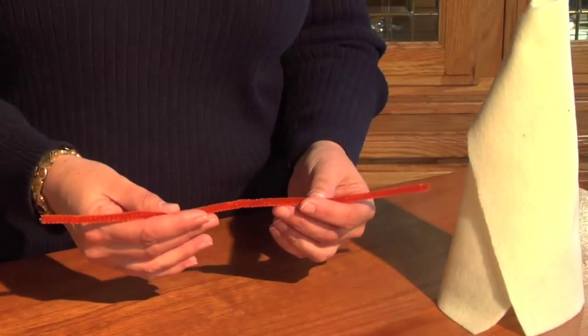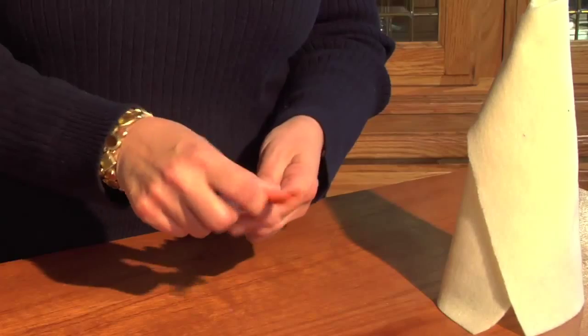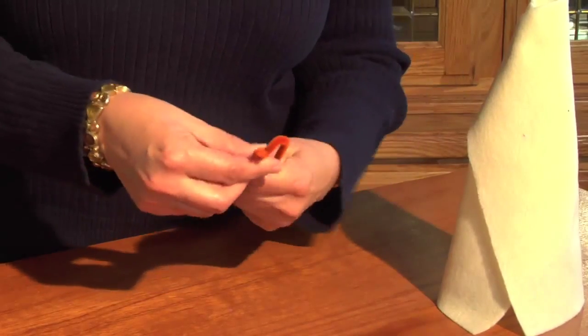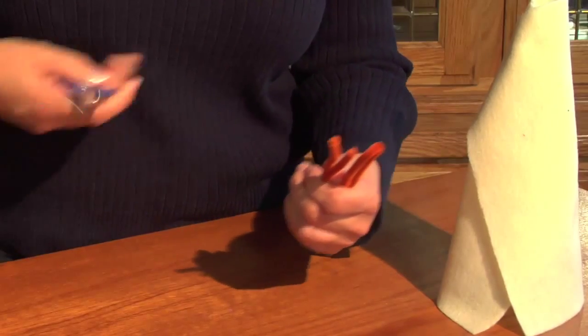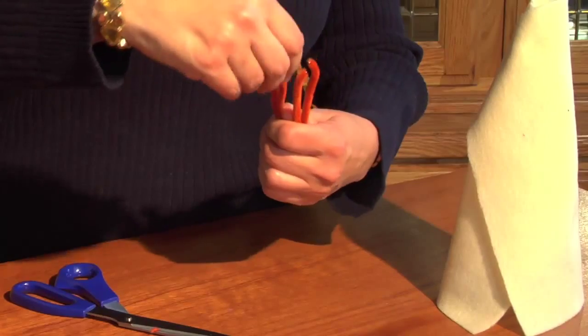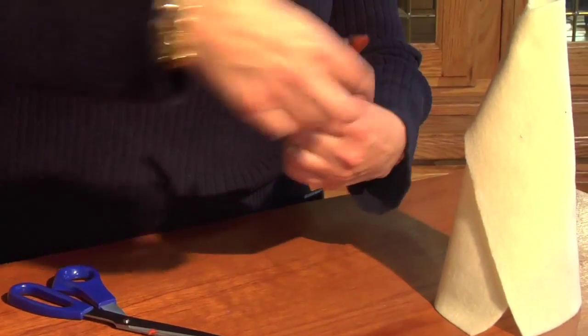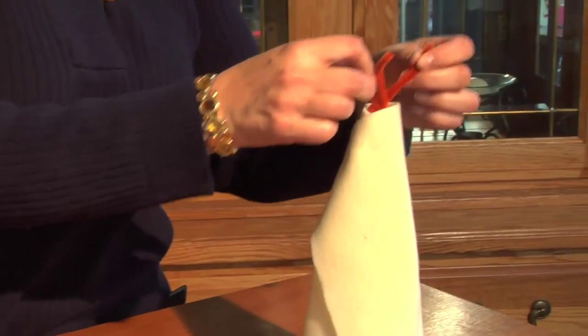Also in a traditional Native American teepee, they are put together with sticks so to give that same flavor to your project you can just take a pipe cleaner. In this rust color too, looks like the sticks, give them each a little tweak and put that in the top of your teepee.